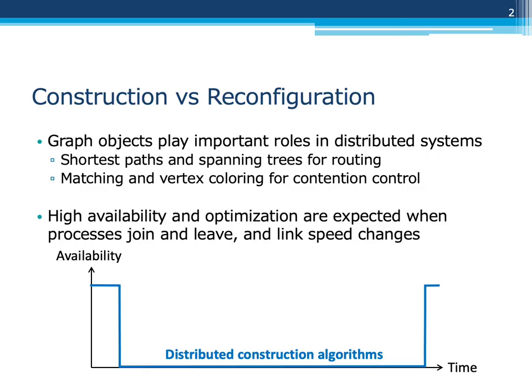Graph objects play important roles in distributed systems. For example, shortest paths and spanning trees provide communication backgrounds, and matching and vertex coloring help contention control. High availability and optimization are expected for these graph objects when processes join and leave and link speed changes.